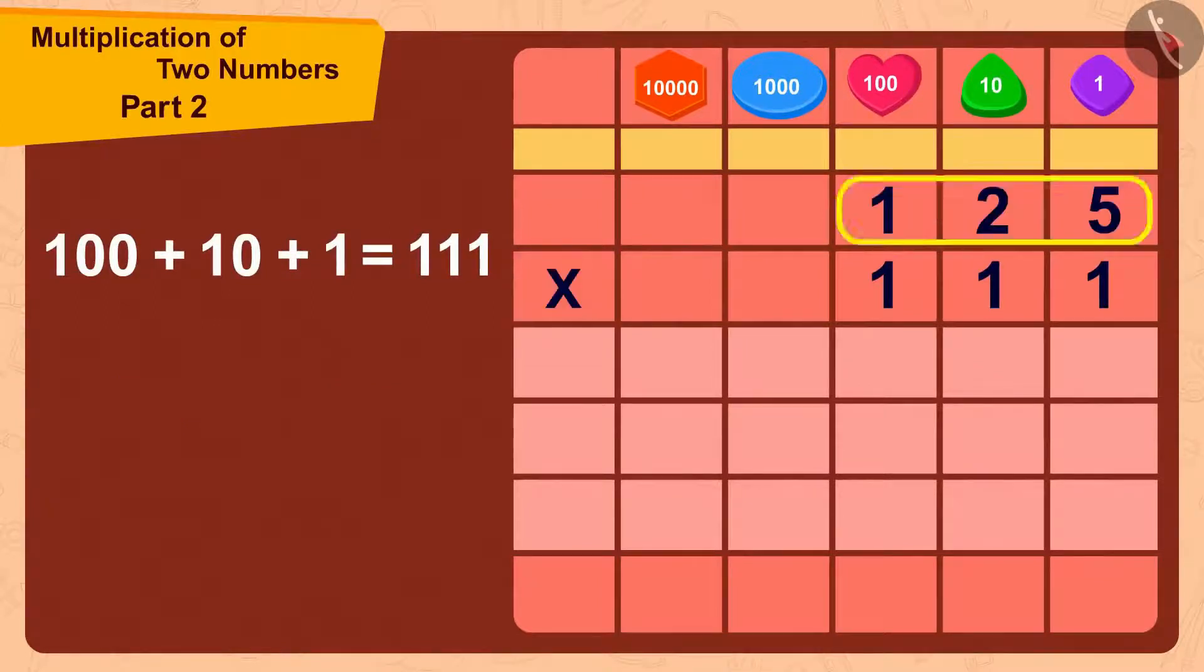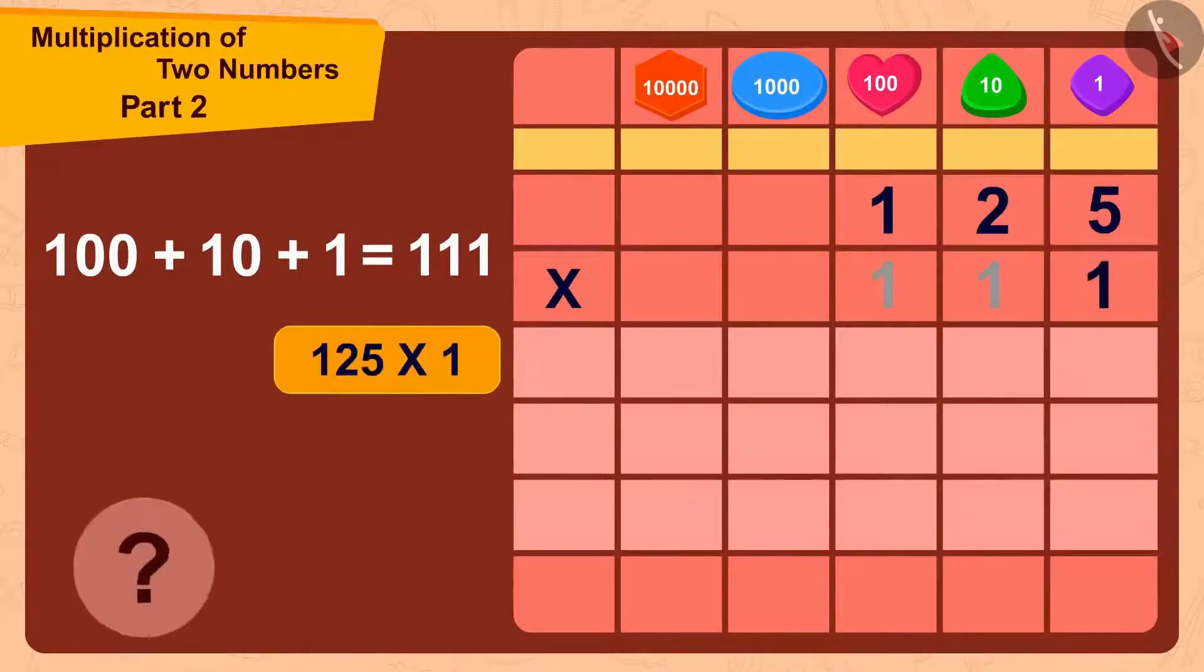We can write 111 in the expanded form by adding 1 and 10 to 100. First, we will multiply 125 with 1. How much is 125 times 1? Exactly, 125.